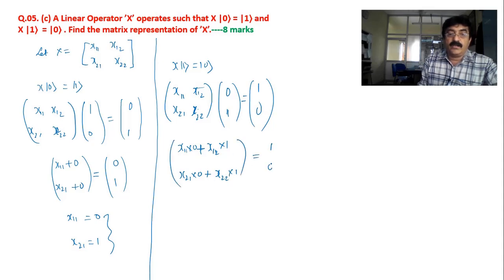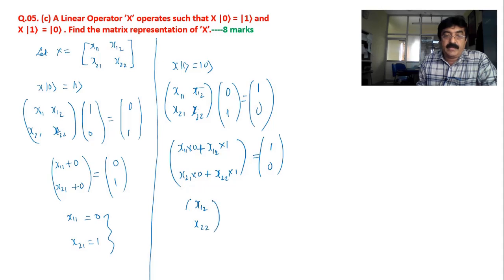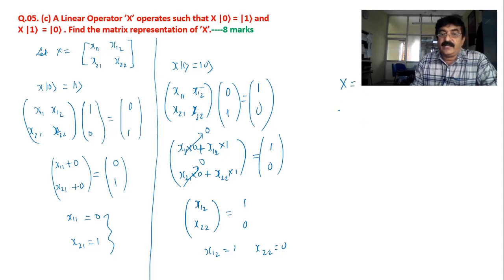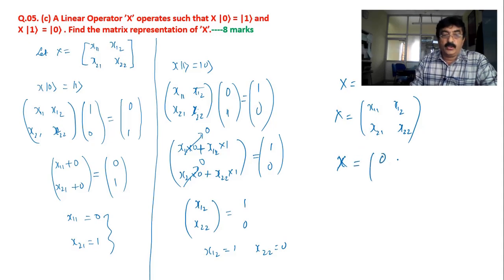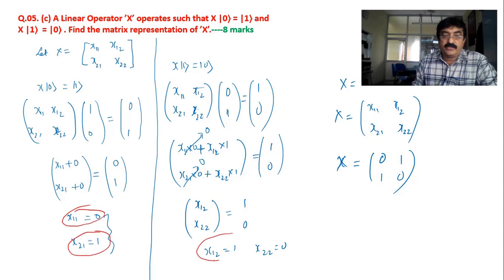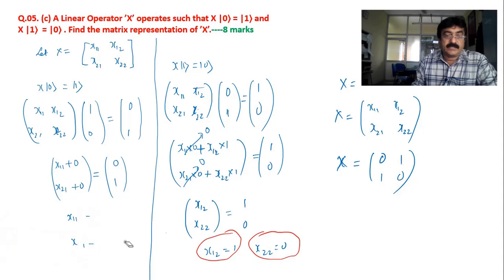Now for the second condition: X ket one equals ket zero. Substituting X operating on ket one — column vector [0, 1] — equals ket zero, which is [1, 0]. Performing the multiplication: X11 times 0 plus X12 times 1 = 1, and X21 times 0 plus X22 times 1 = 0. Therefore X12 equals 1 and X22 equals 0.